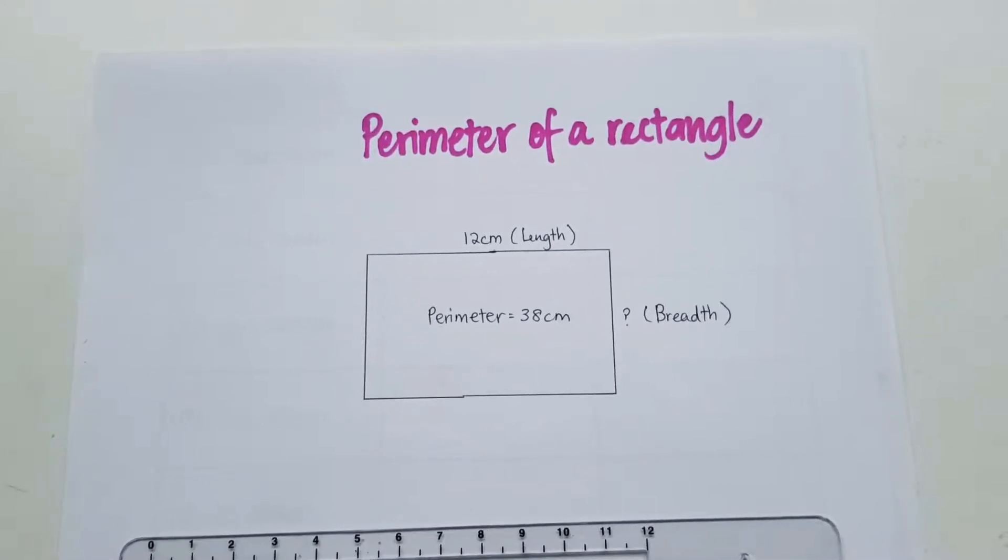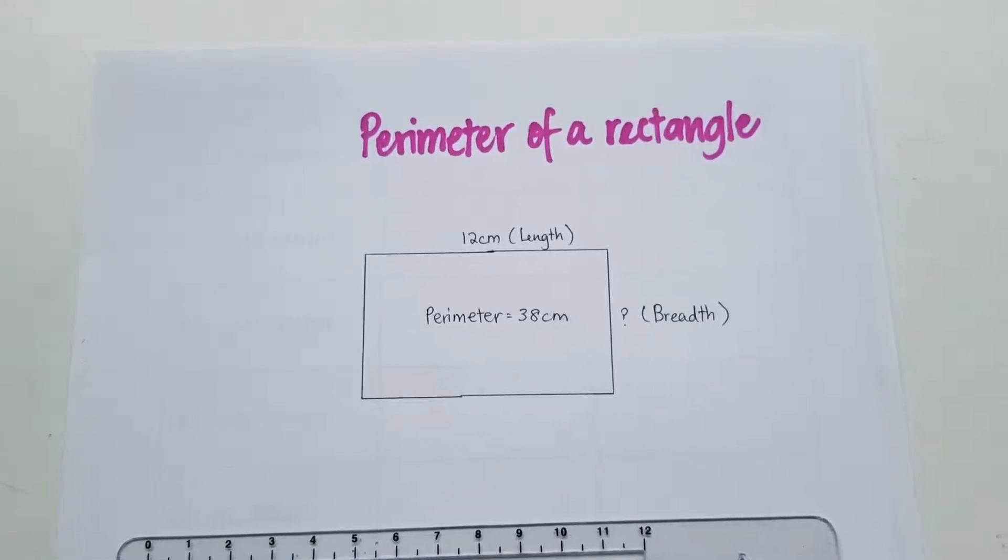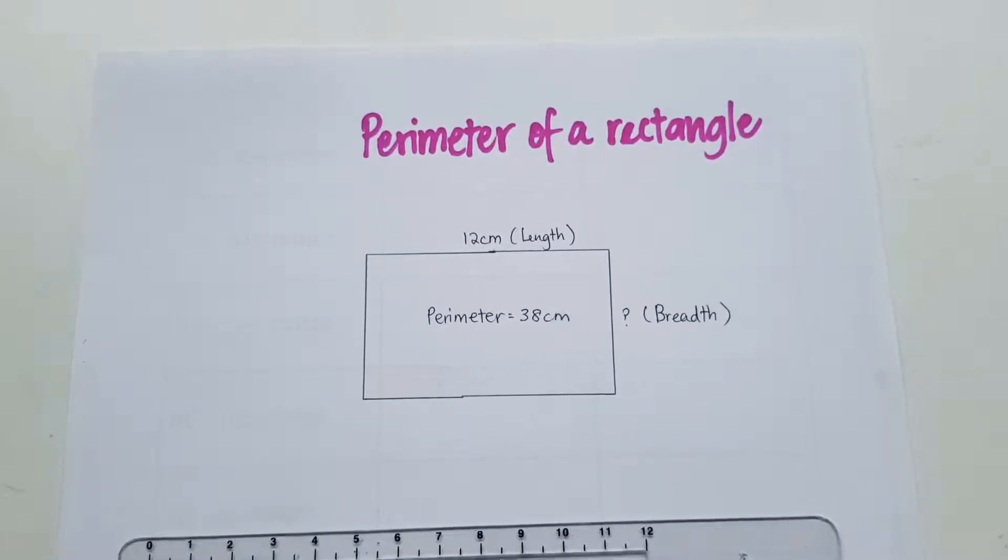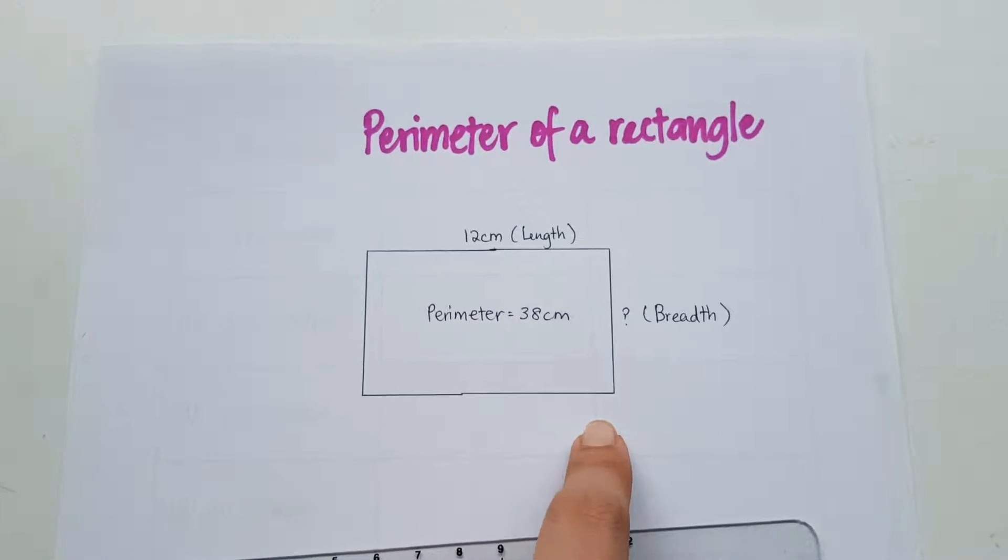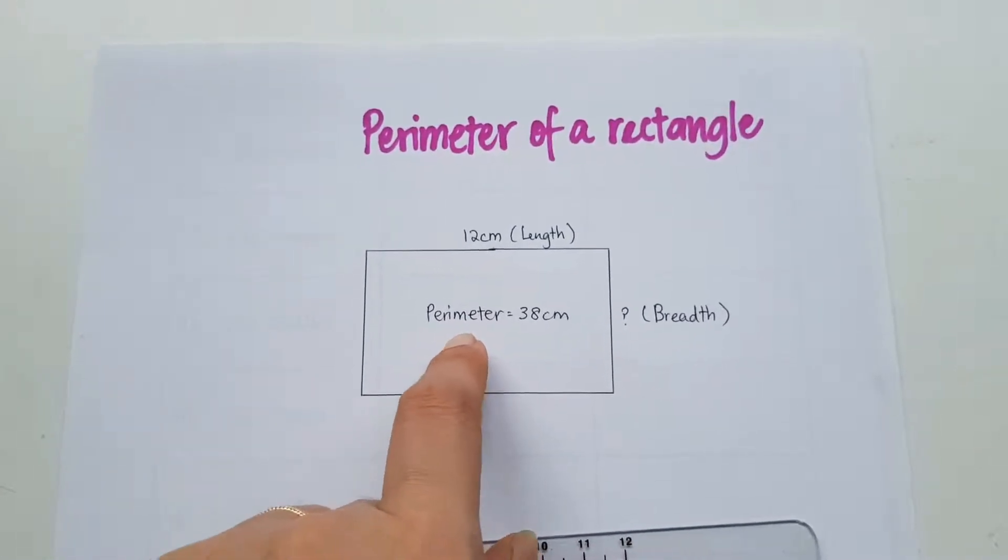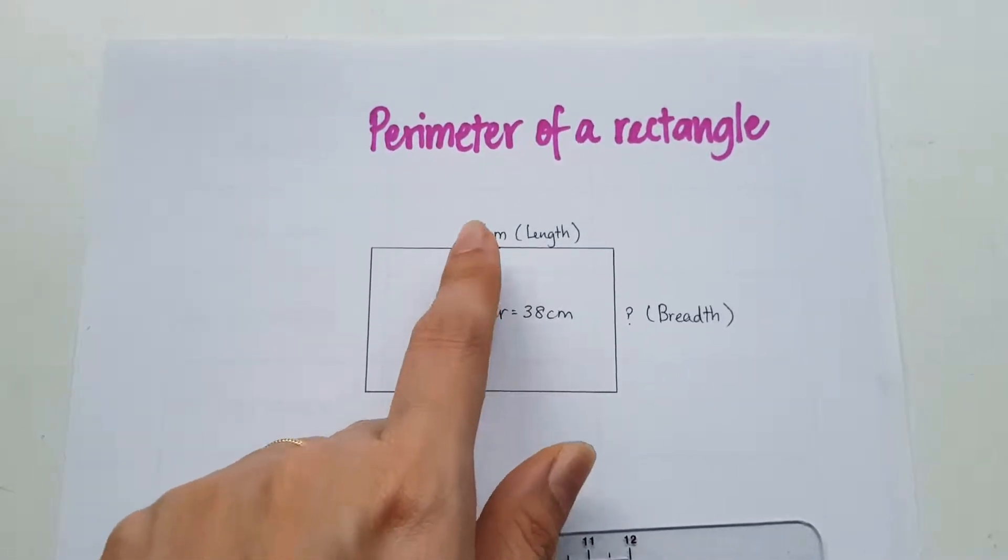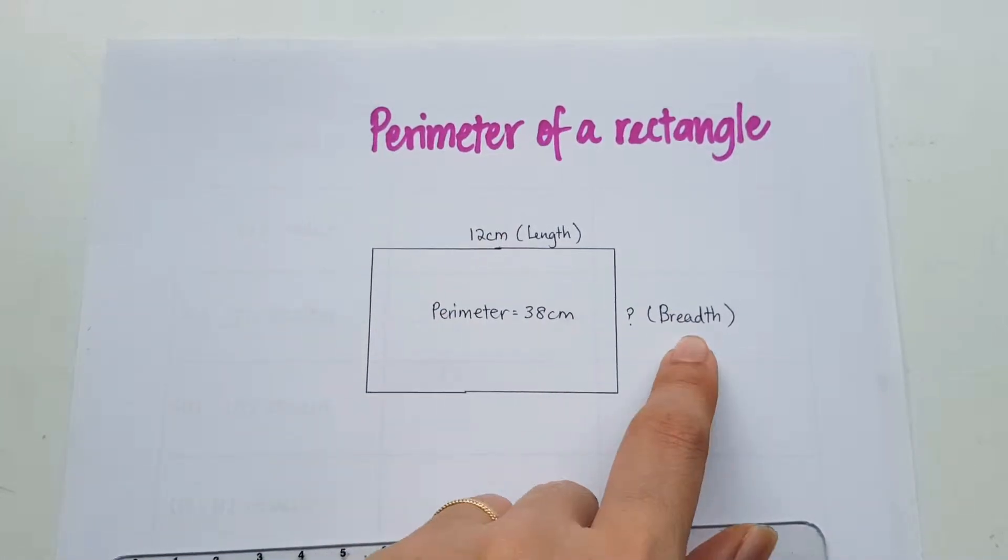In Premier 3, we learned how to find the perimeter of a rectangle. But in Premier 4 now, it's not going to be so straightforward. We're not just going to be given the length and the breadth and told to find the perimeter. In this case, we are given the perimeter, the length, and we need to find the breadth.